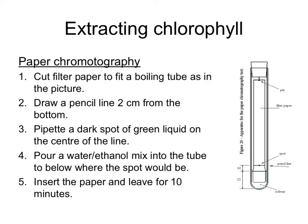Paper chromatography involves putting a spot of the material onto a piece of paper near the bottom, on a pencil line, then suspending the paper in a solvent at the bottom — making sure the dot is above the solvent level. As the solvent rises up the paper, it draws the dissolved plant materials upward. Different materials move at different rates because some cling to the paper better than the solvent, and others cling to the solvent better than the paper, resulting in a row of separated spots.